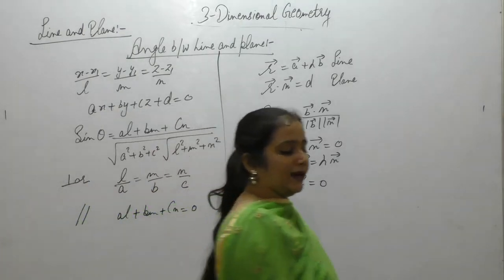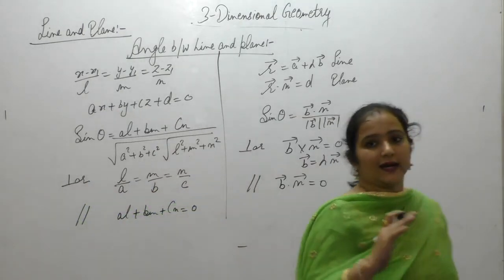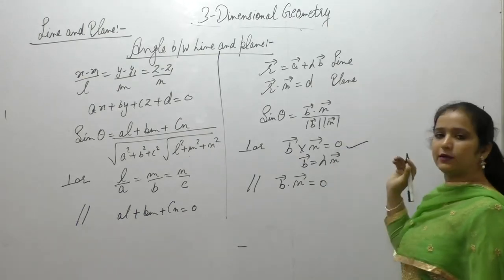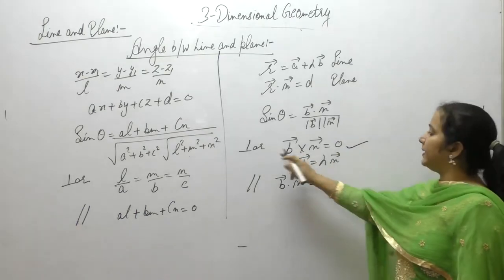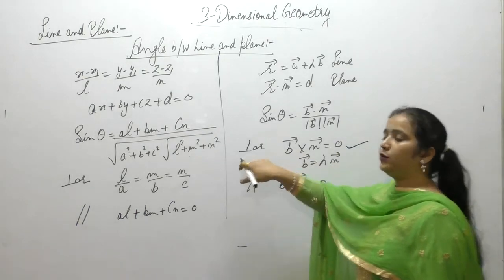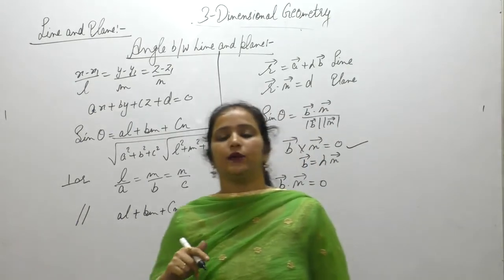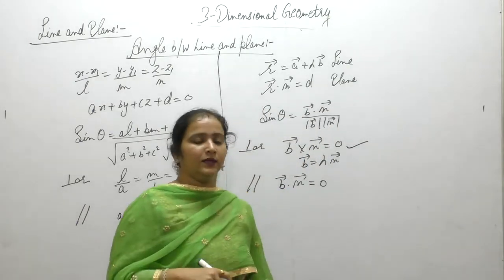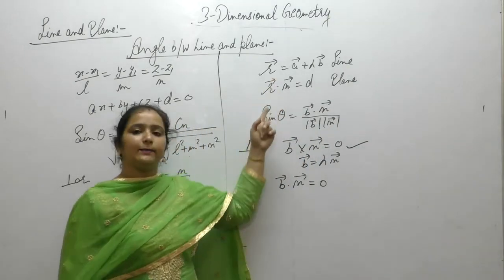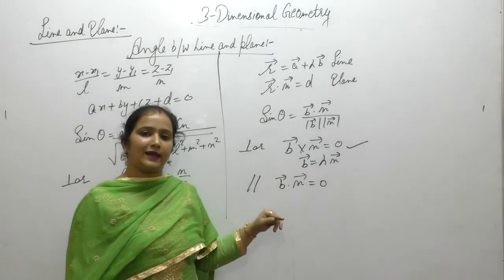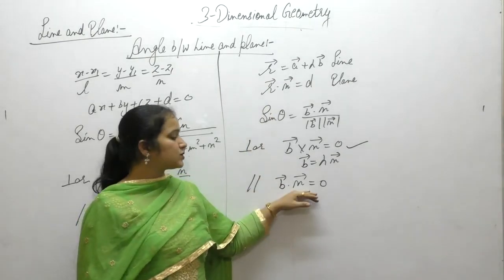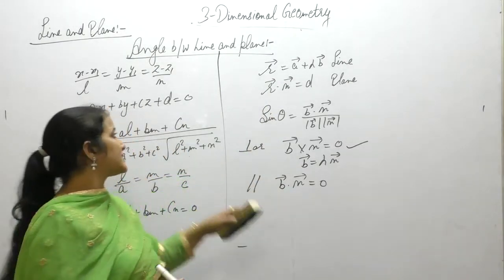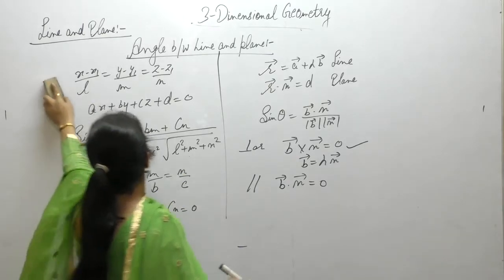To summarize: if the line is parallel to the plane, then it is perpendicular to the plane's normal. And if the line is perpendicular to the plane, it becomes parallel to the plane's normal. Let us now start with the questions.